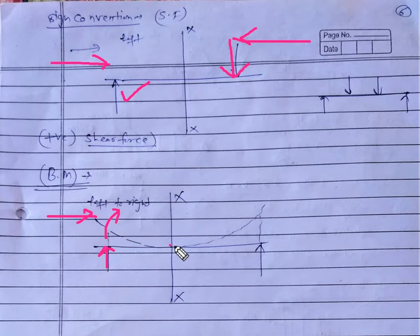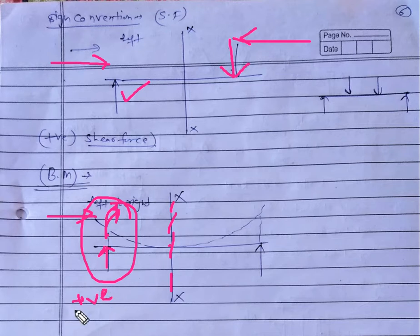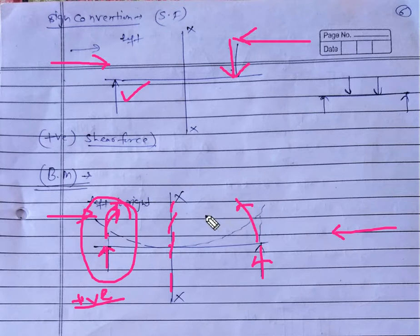With respect to the cut section, if the force tries to bend the beam in the upward direction relative to the cut section, this type of bending moment is considered as a positive bending moment. Similarly, if you are approaching from right to left and the forces try to bend the beam in the upward direction with respect to the cut section, this is also considered as a positive bending moment.